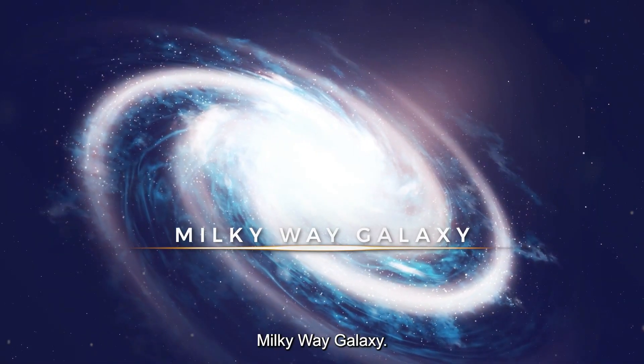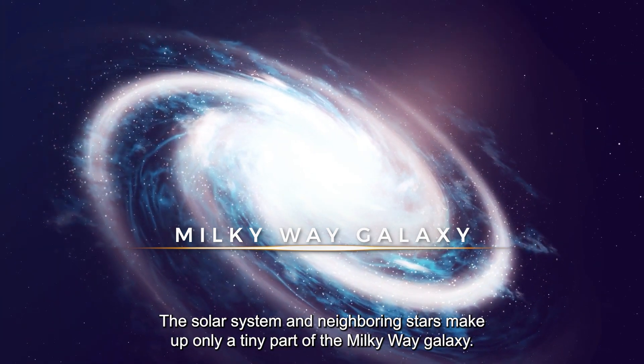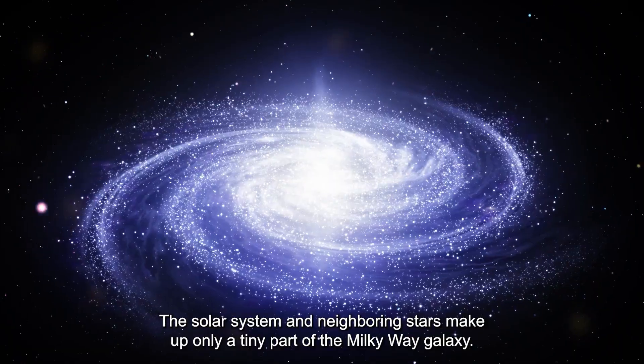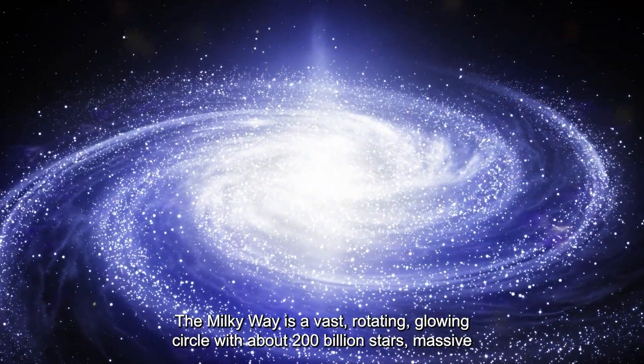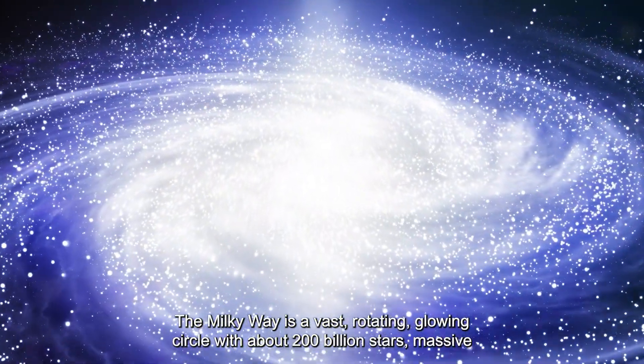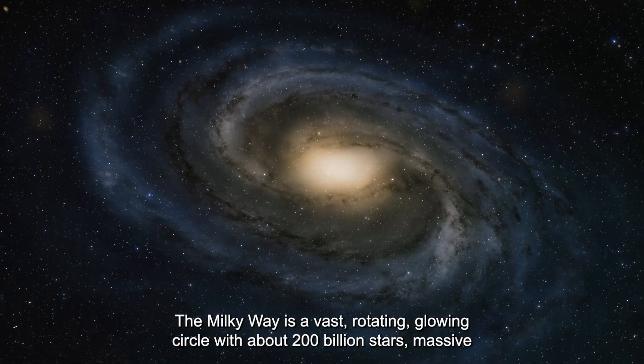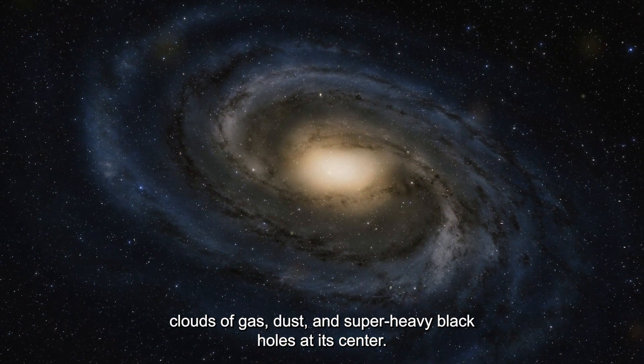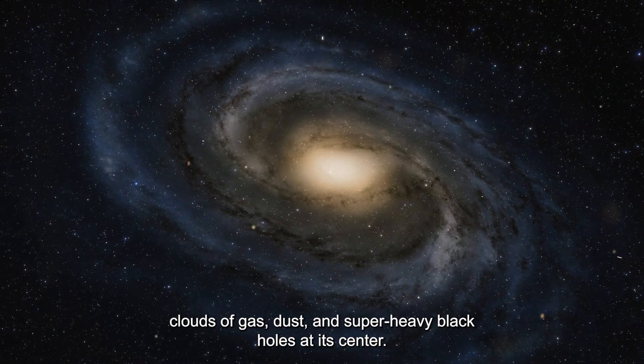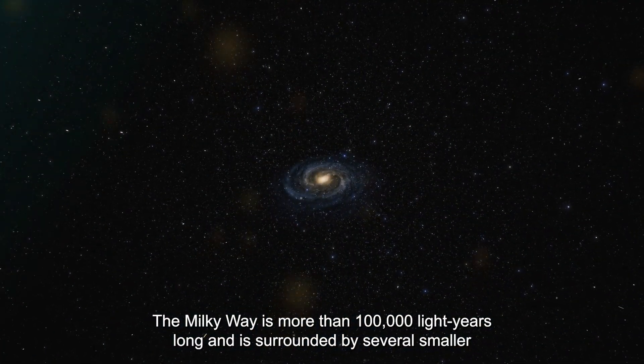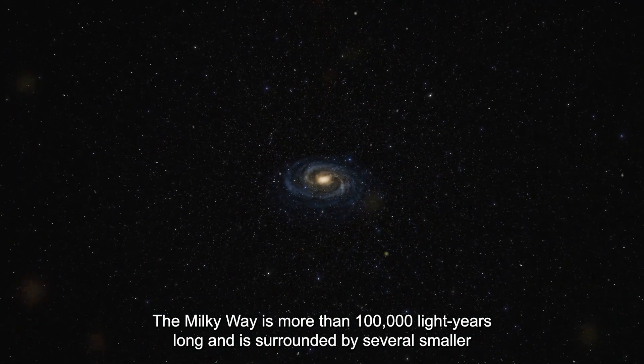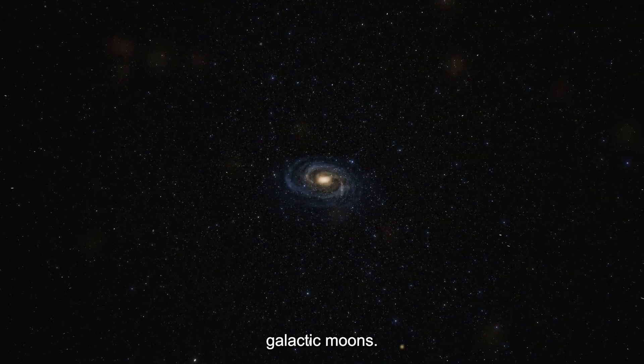Milky Way Galaxy. The solar system and neighboring stars make up only a tiny part of the Milky Way galaxy. The Milky Way is a vast, rotating, glowing circle with about 200 billion stars, massive clouds of gas, dust, and super-heavy black holes at its center. The Milky Way is more than 100,000 light years long and is surrounded by several smaller galactic moons.